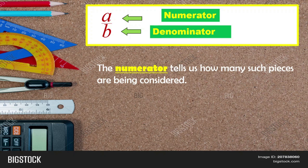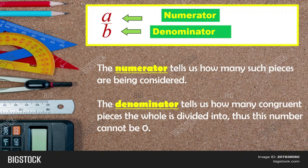The numerator tells us how many pieces are being considered — kung ilan yung sinishade natin. Say for example, we have a circle divided into four; the shaded part is the numerator. The denominator tells us how many congruent pieces the whole is divided into, and this number cannot be zero — kung ilang hati yung bilog. So that is the denominator.